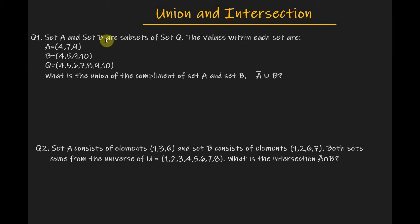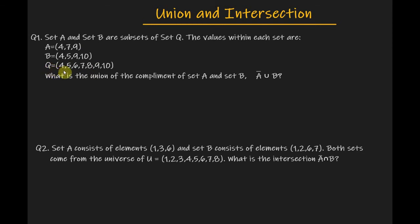Problem statement number one. Set A and set B are subsets of set Q. Set A contains the elements 4, 7, 9. Set B contains the elements 4, 5, 9 and 10. And set Q contains the elements 4, 5, 6, 7, 8, 9 and 10.